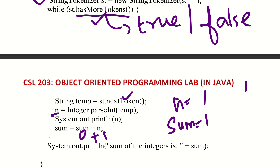For example, if we enter 1, 2, 3 with one space gap, the first token is 1, so n equals 1 and sum becomes 1. Then hasMoreTokens checks again — the next token is 2, so n equals 2 and sum is updated to sum plus n using Integer.parseInt to convert the token.